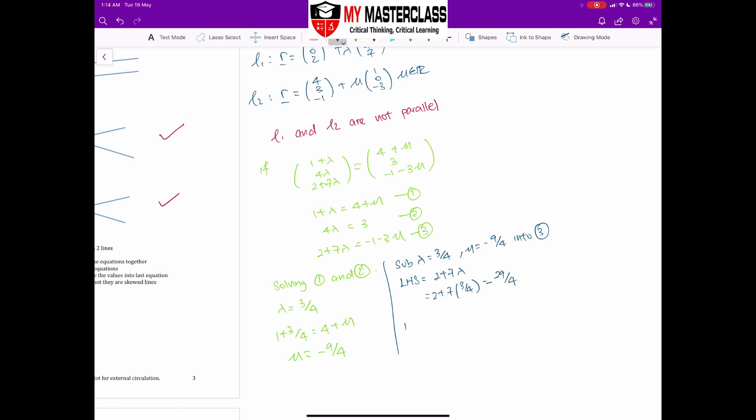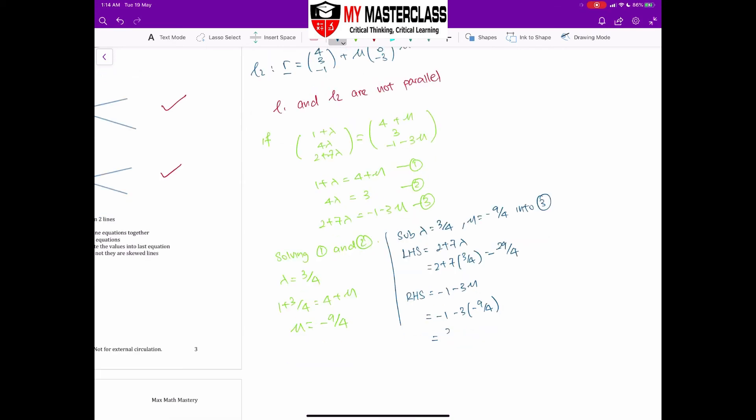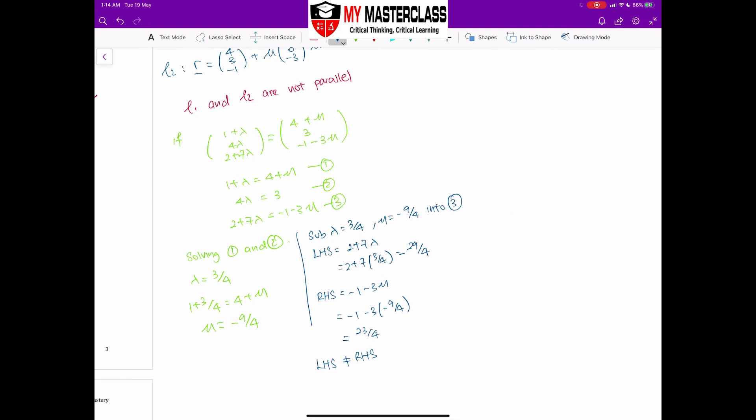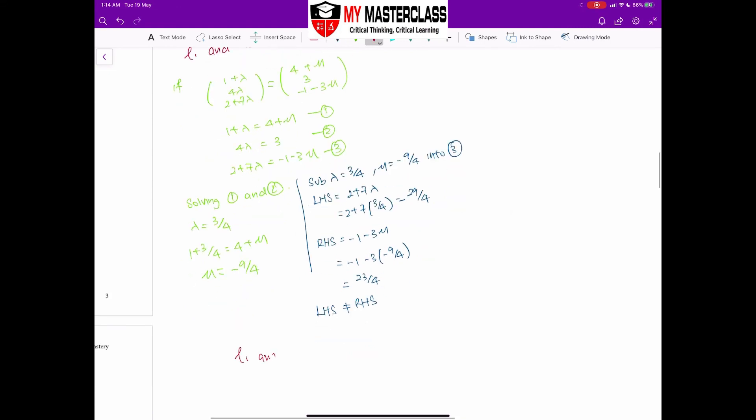Then I'm going to quickly jump onto my right-hand side which is equal to -1 minus 3 mu. I'm going to sub in my value of -9/4. I can quickly calculate this to be 23/4. And since left-hand side is not equal to right-hand side, we can simply derive that line 1 and line 2 are skewed lines.